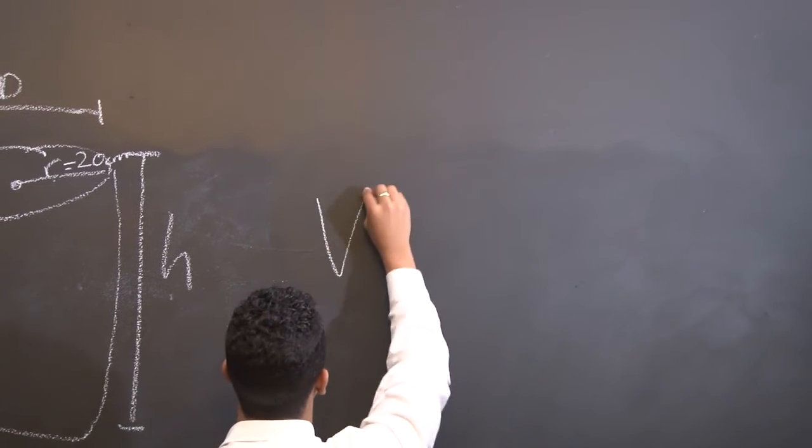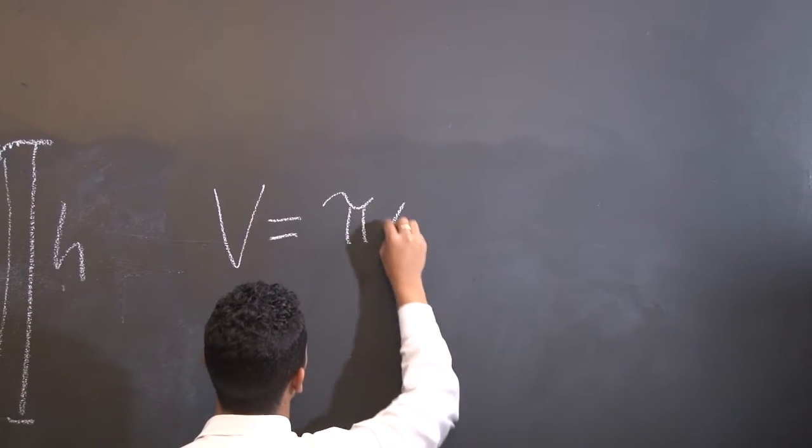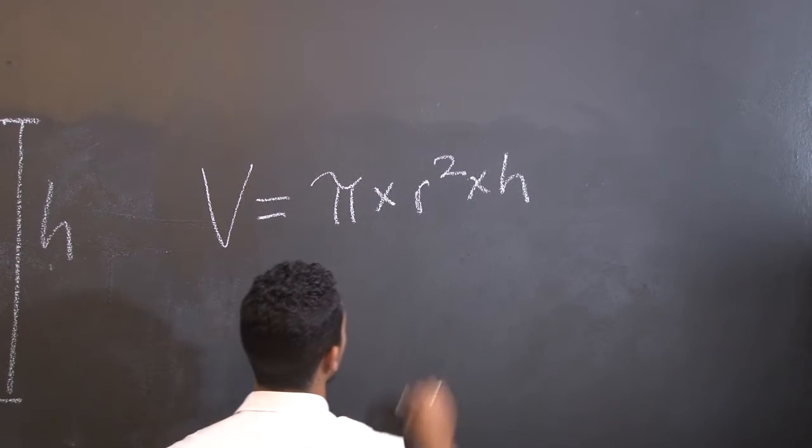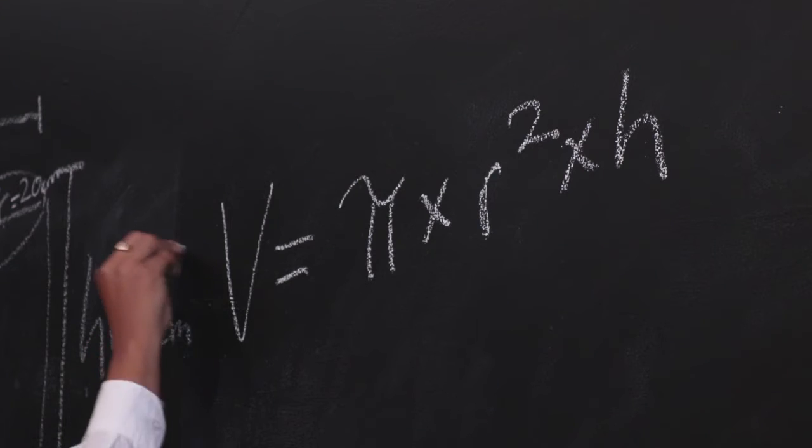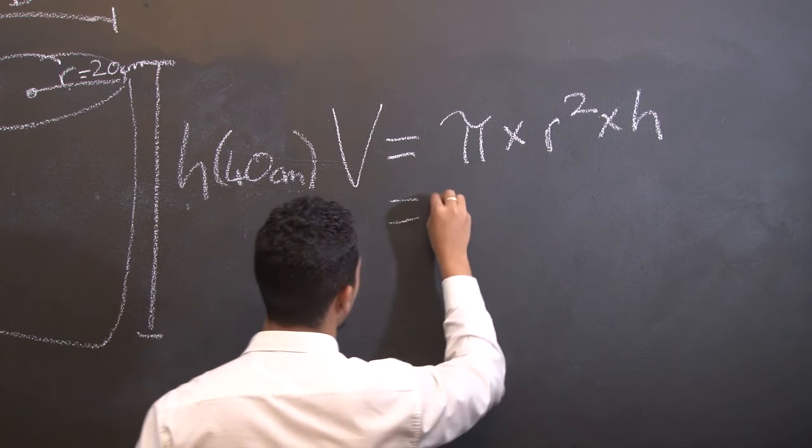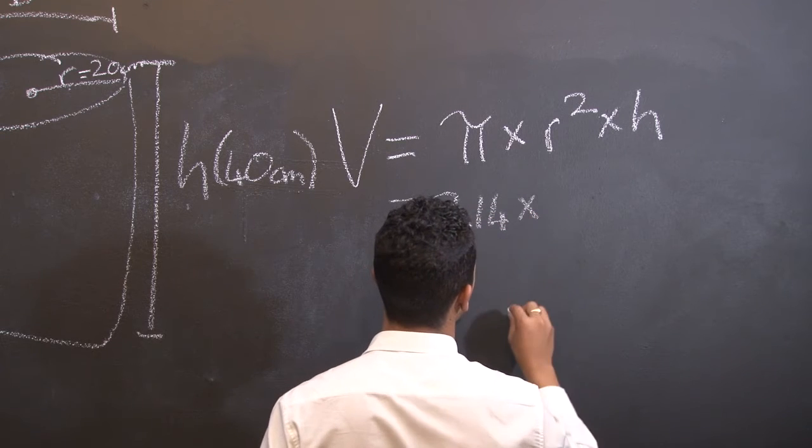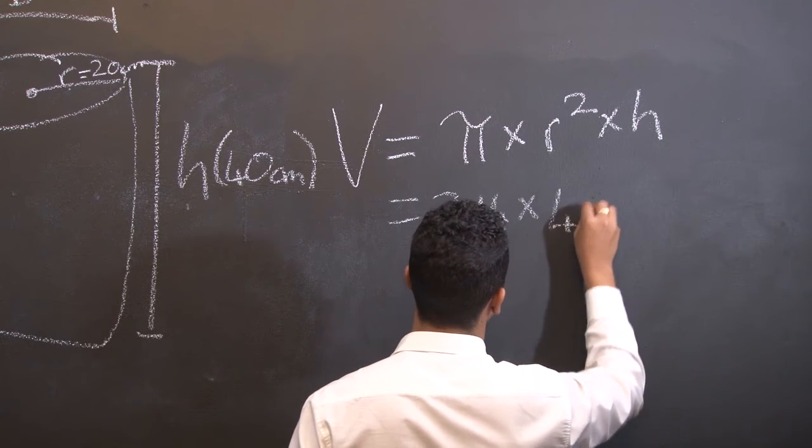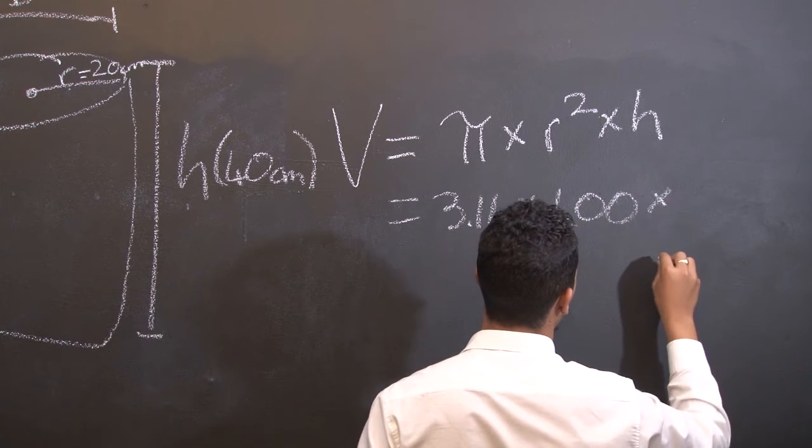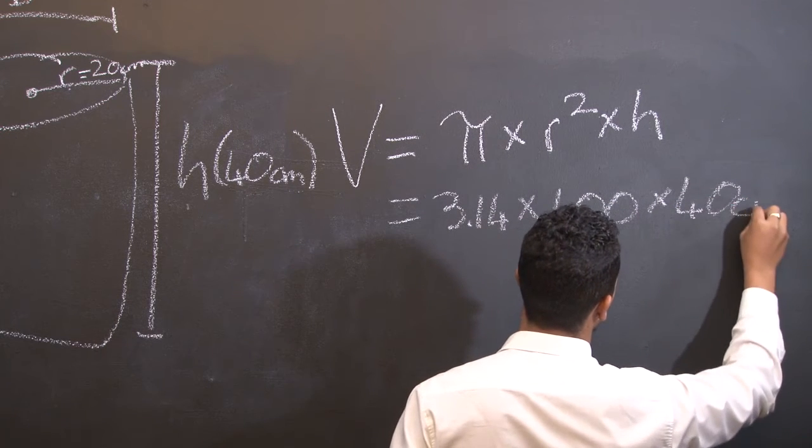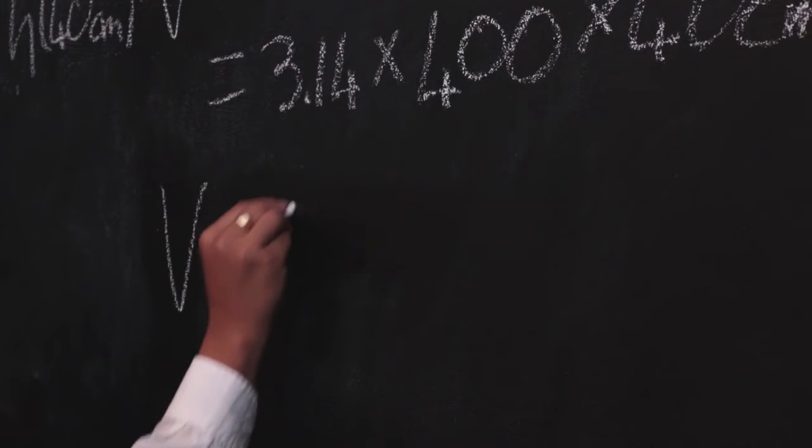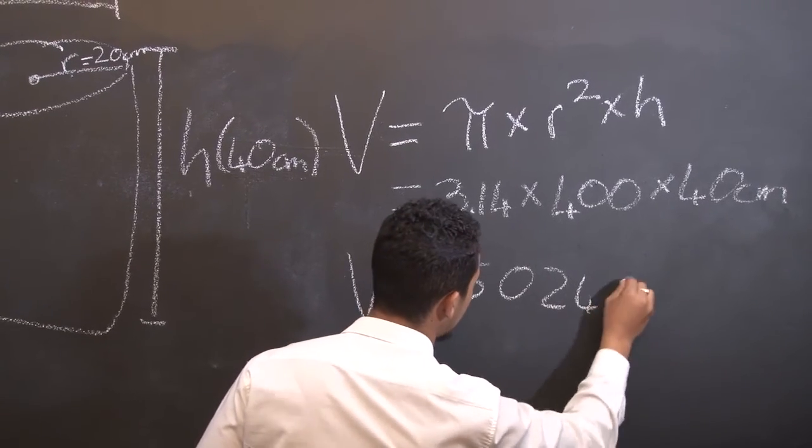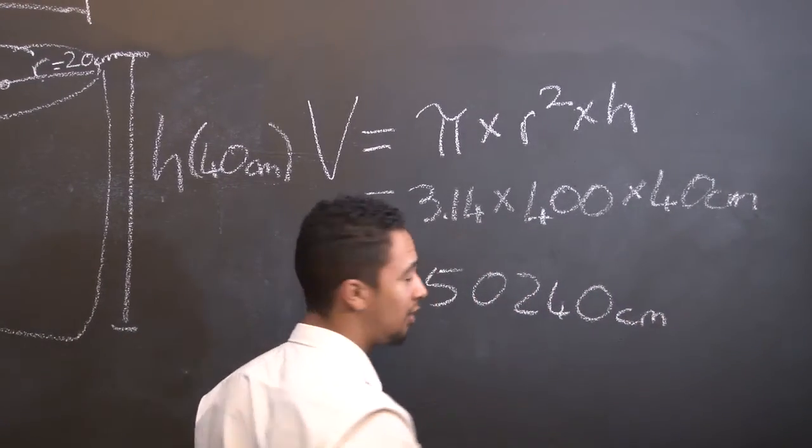Now let's look at the volume. The formula for volume is equal to pi times r squared times h. So we know that h is 40 centimeters. Let's substitute: 3.14 times by r squared, which is equivalent to 400, times by the height, which is 40 centimeters. So using your calculator, volume equals 50240 centimeters, you guessed it, cubed.